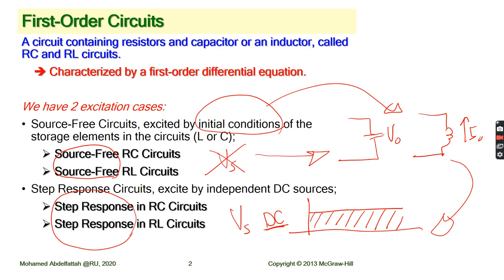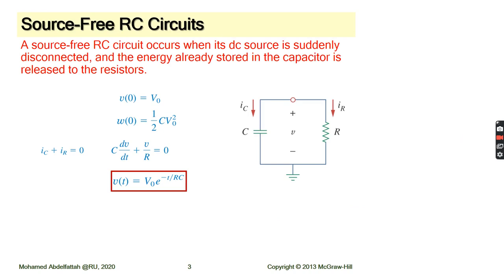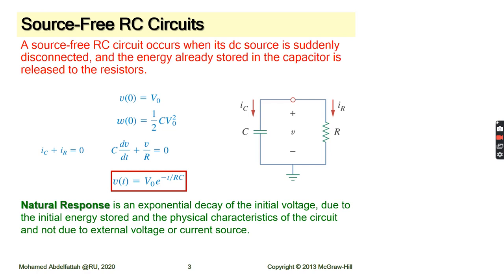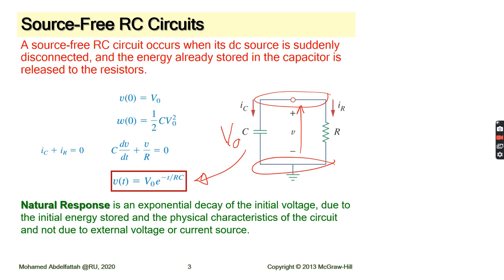This is the first circuit we will consider: a simple RC circuit. If you try to solve the circuit to find the current, you have this equation. The capacitor's initial voltage is V0, and the voltage across the capacitor — which is the same as the voltage across the resistor — is described by an exponential equation with a negative exponent. This means it will start from V0 and decay down to zero.